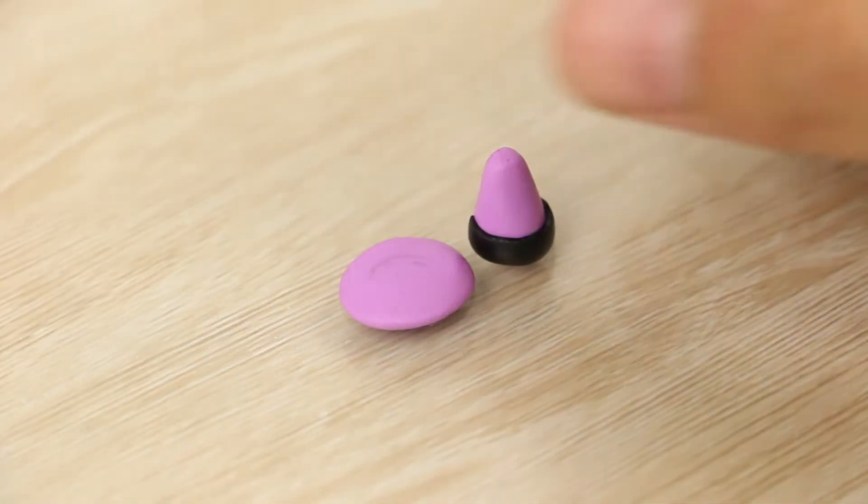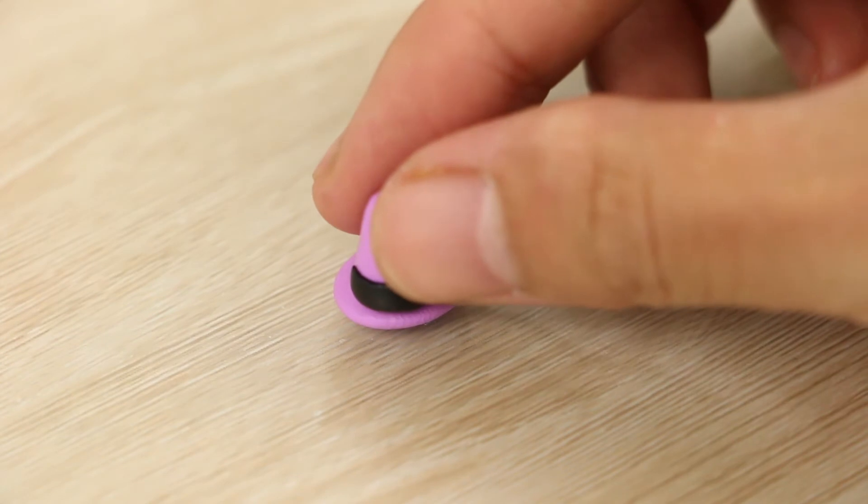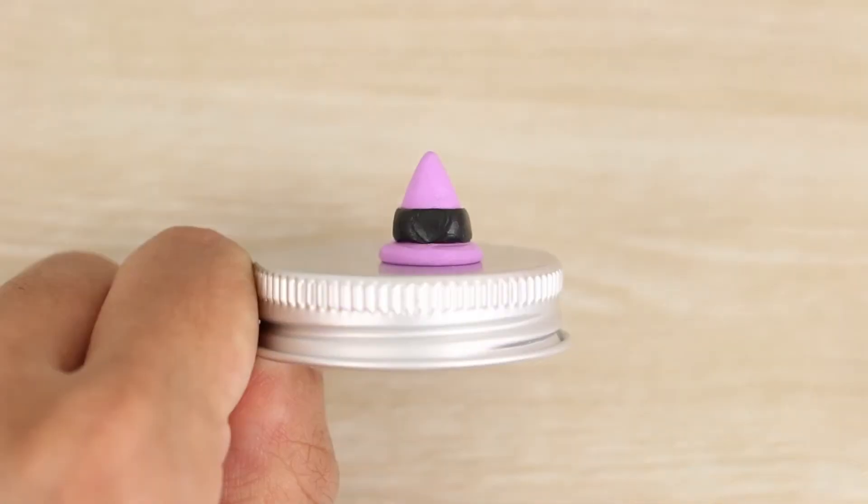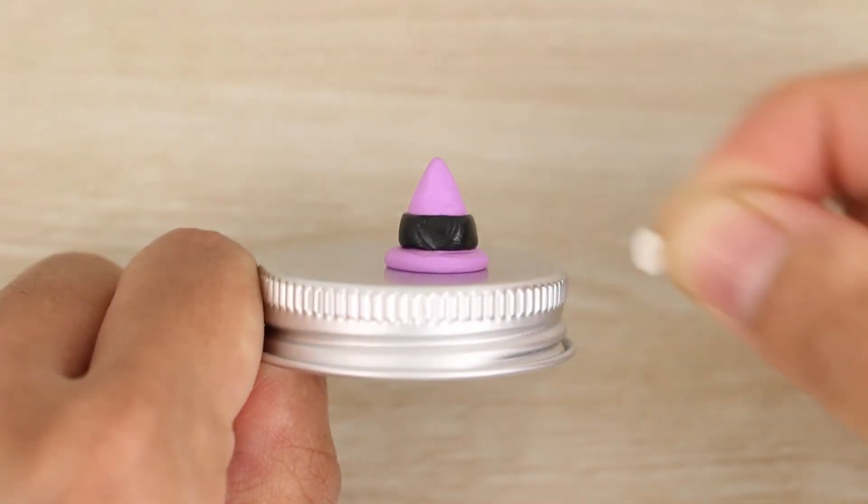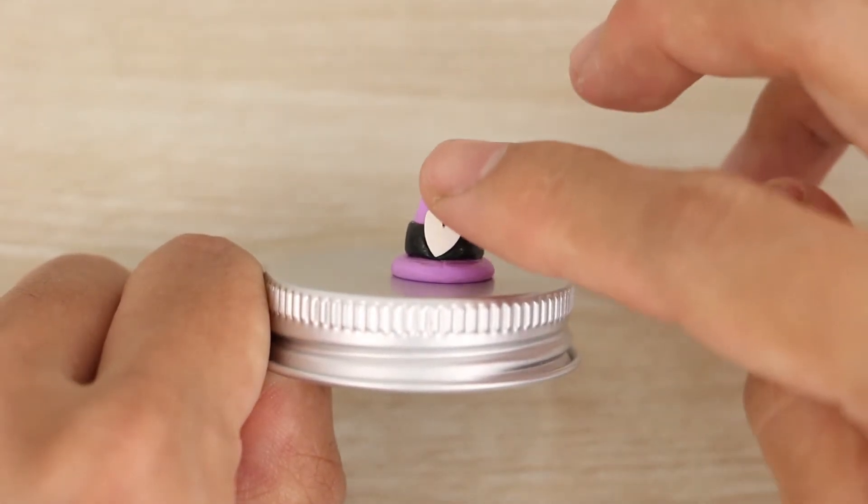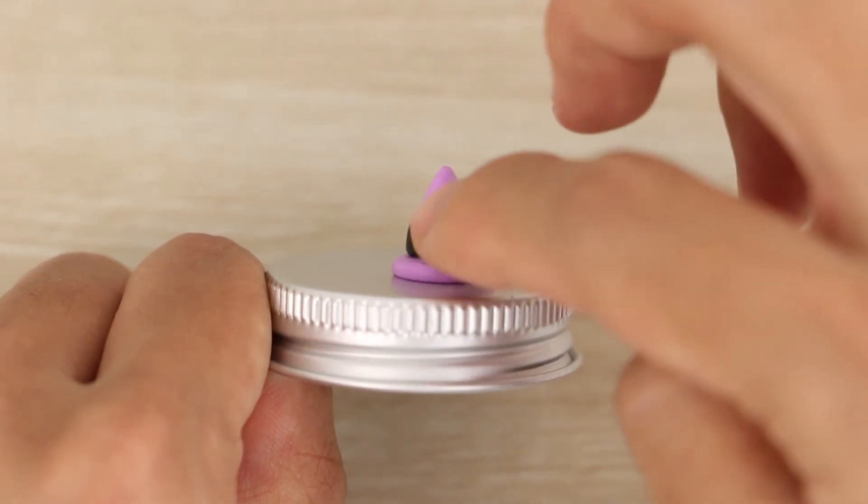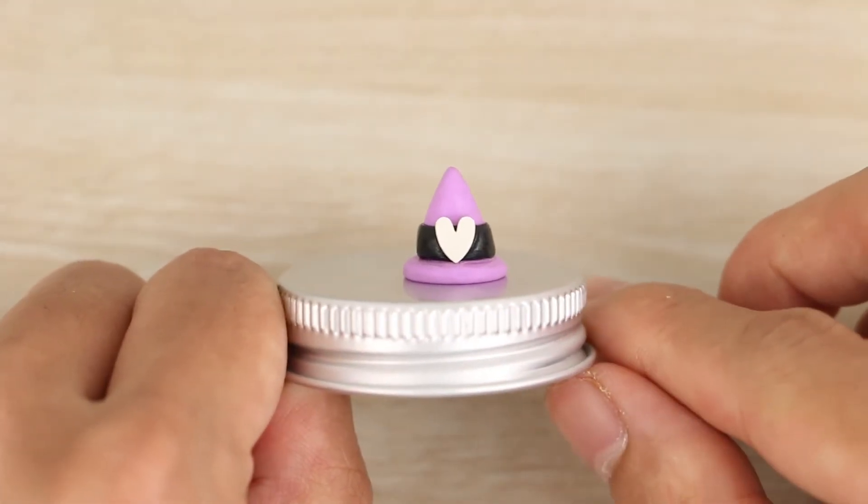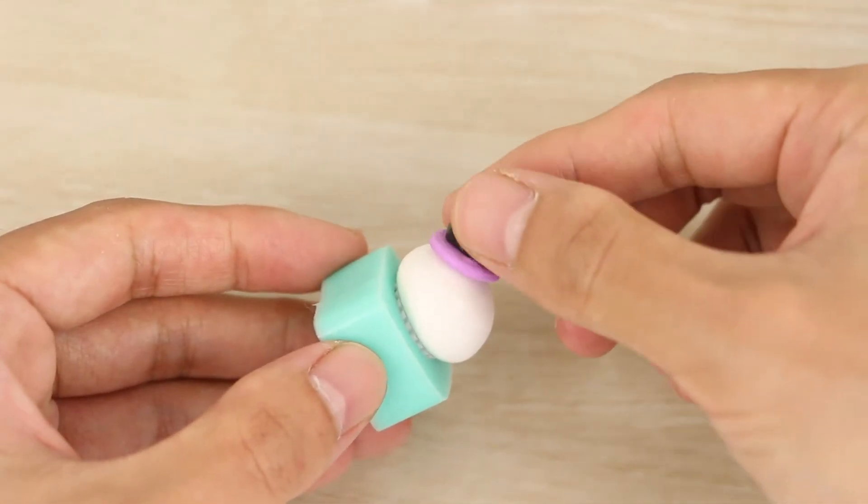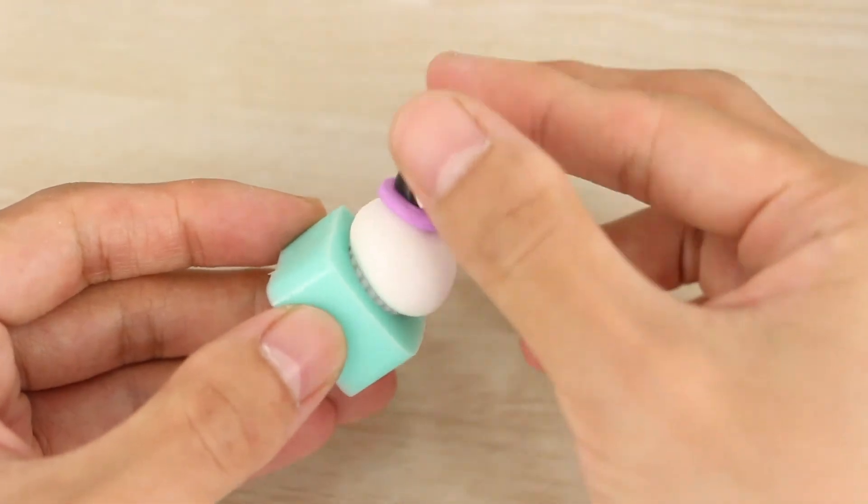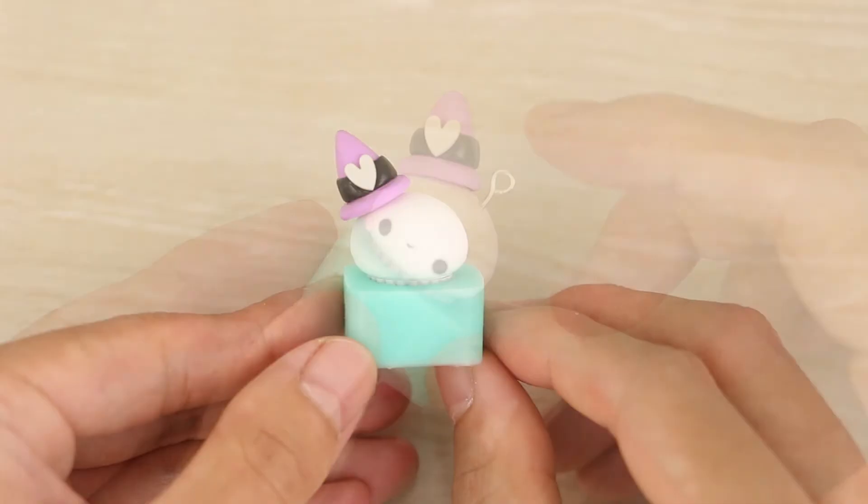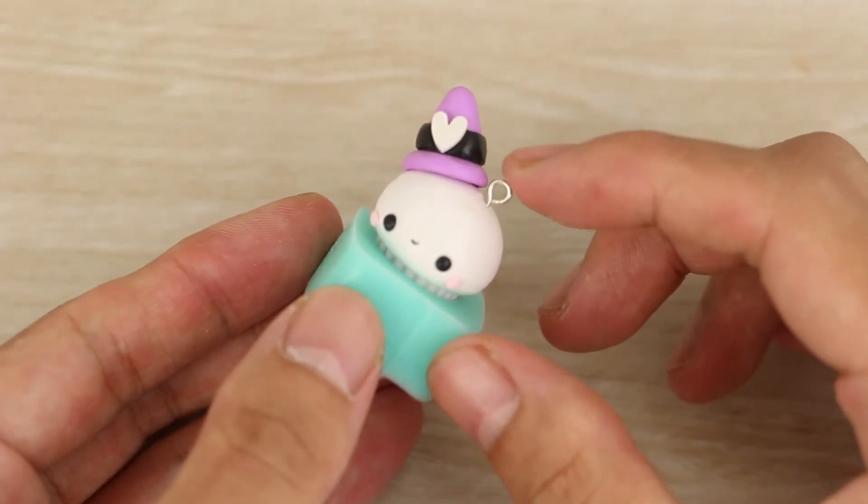Then popping the cone onto a flattened disc of purple clay and placing a pre-made white heart cane onto the middle of the band. Then placing the whole thing onto the left side of the ghost head. Next I've added the face and now an eye pin to turn it into a charm.